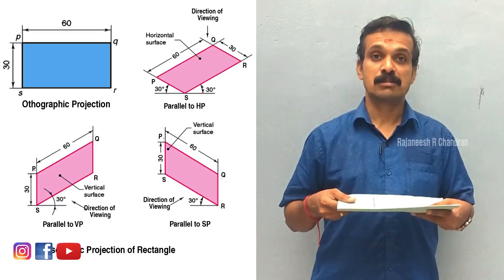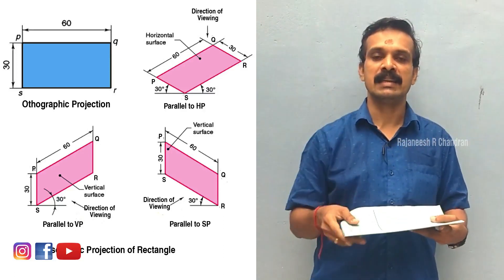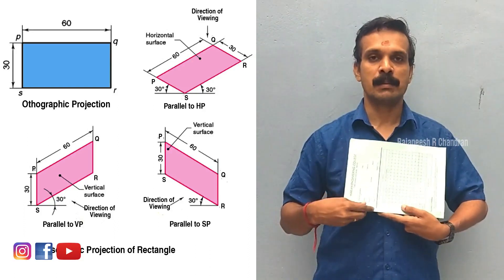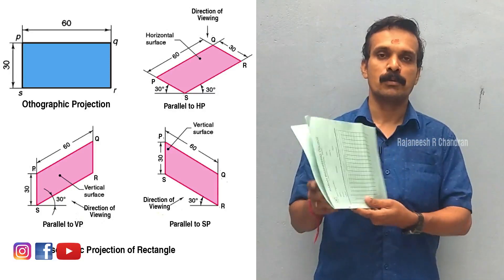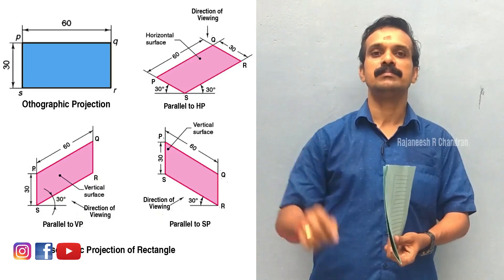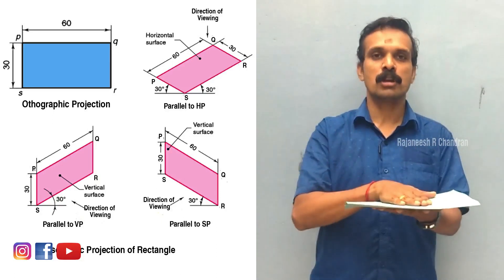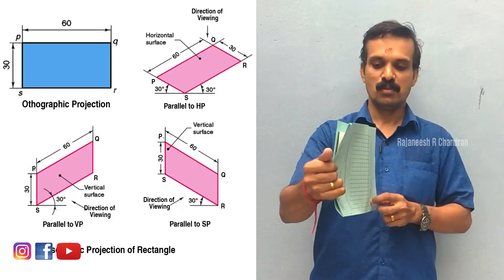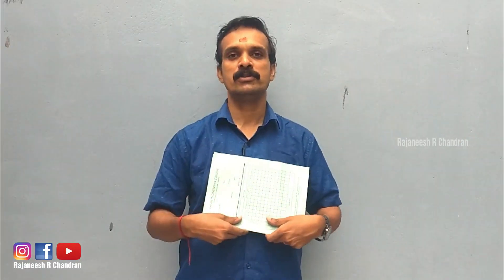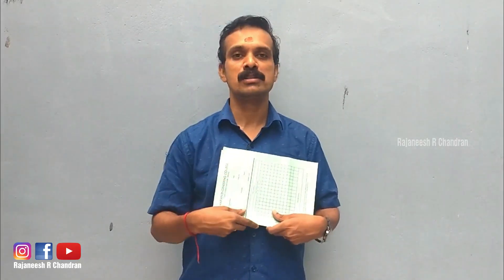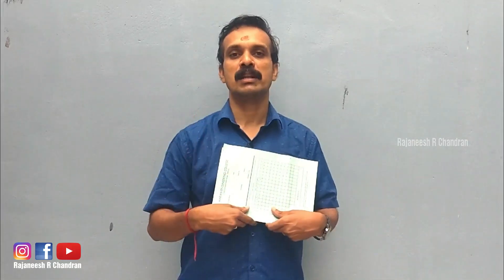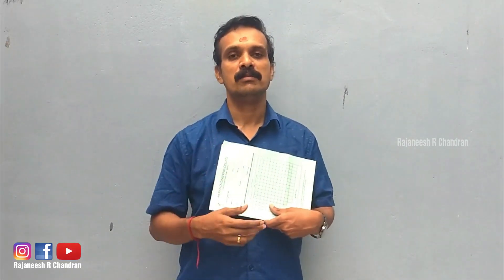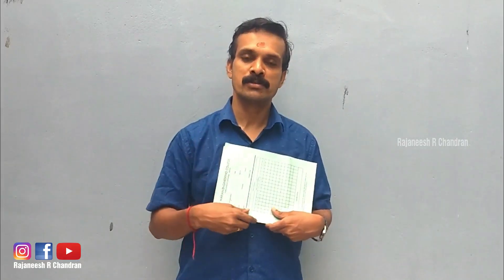The XY plane or HP is represented as 30 degrees right and 30 degrees left in isometric. A vertical plane (XZ plane) is represented as a 30-degree line and a vertical line. The profile plane (YZ plane) is represented as a vertical line and a 30-degree line towards the left. In the next videos, we will learn about the construction of isometric views and isometric projections for laminas, prisms, pyramids, cylinders, and then combinations. Thank you.